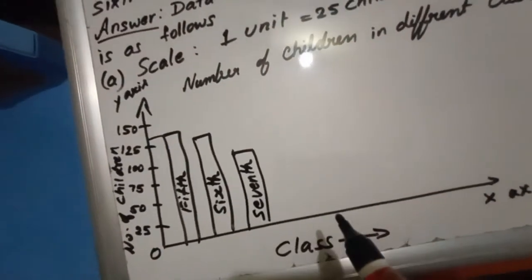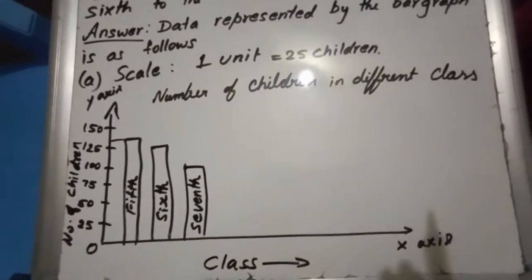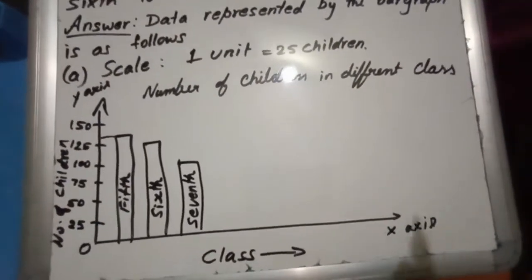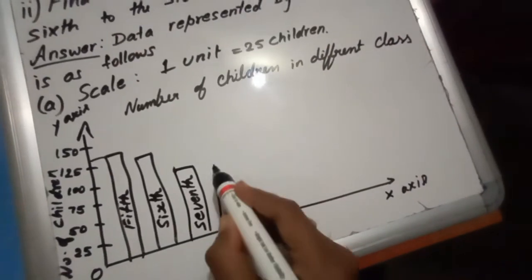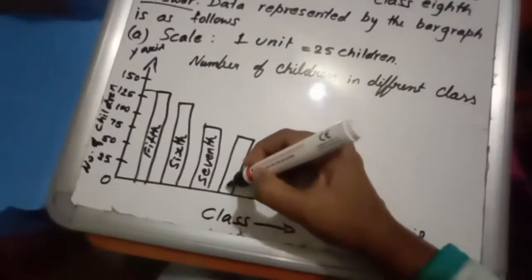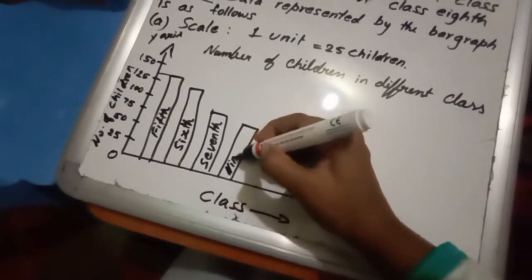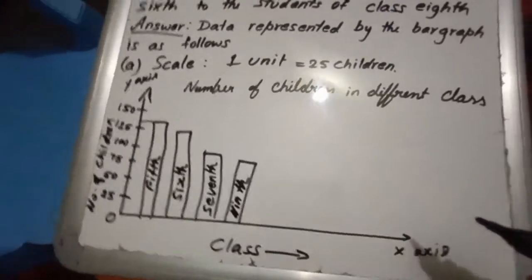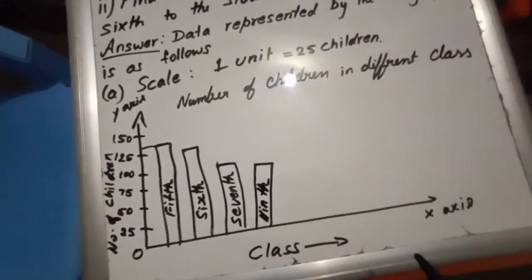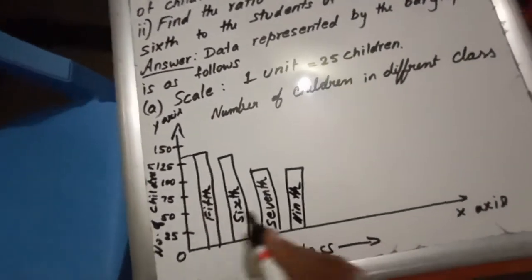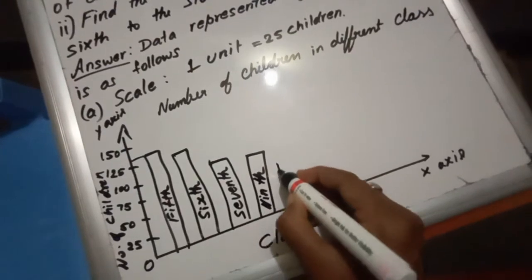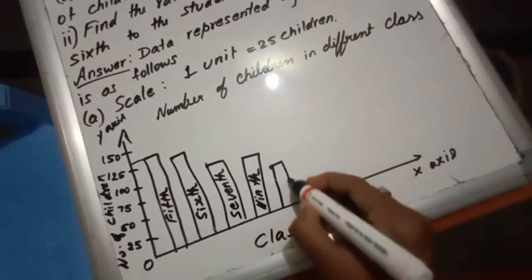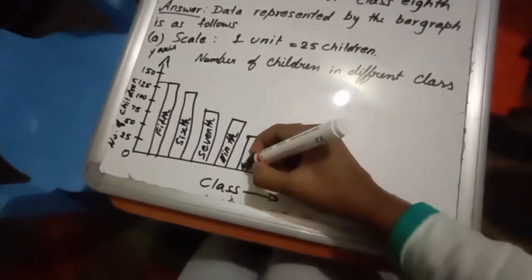Next one is 9th. 9th means 90. So let us choose here 9th, N-I-N-T-H, 9th. The next one is 10th is 80. 80 will be coming above 75. So I will take it here. That is which class? 10th. So you can mention that.